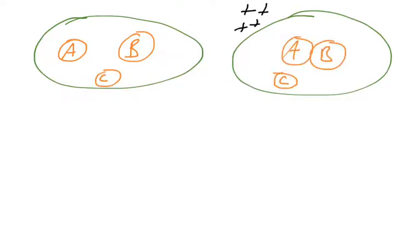Again, here's our cell on the left with proteins A, B, and C not interacting. The cell on the right has proteins A and B interacting.